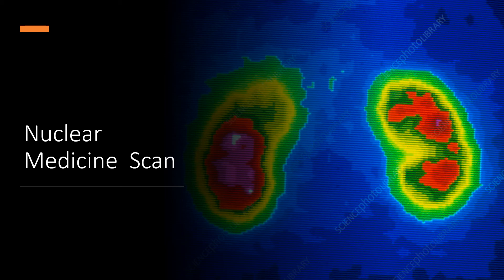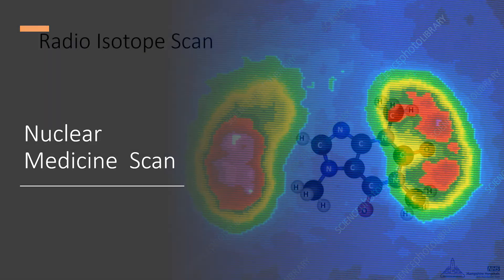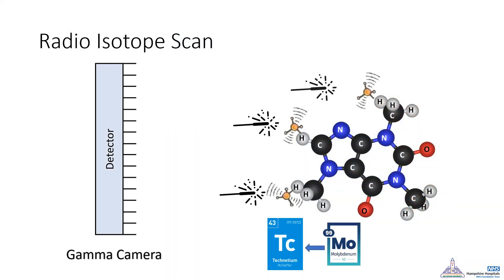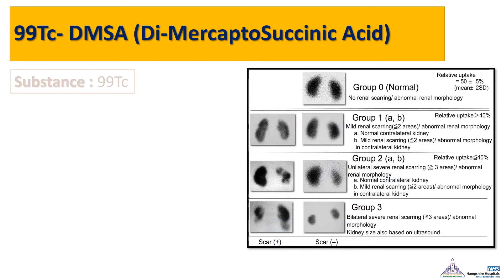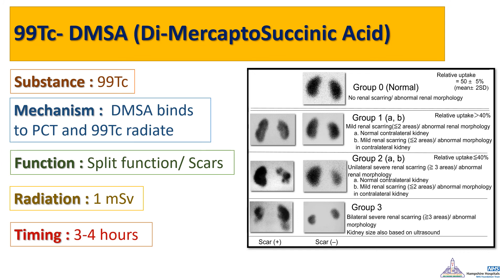In the current era, nuclear medicine scans have made significant changes in the urology field. The main idea is to use a radioactive material which is injected and attached to another material with a special affinity to the targeted organ, then a camera detects the emitted radiation. In the DMSA scan, technetium-99m is combined with dimercaptosuccinic acid, which has an affinity to bind with the proximal tubules. This allows detection of the functional units of the kidney and any scars. It is a long scan, usually taking 3 to 4 hours.